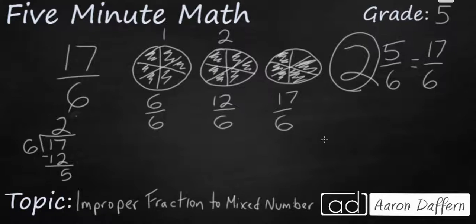We've got 5 pieces left. So that's going to be your numerator because that's your 5, 6ths right there. Your denominator stays the same. 2 and 5 sixths.